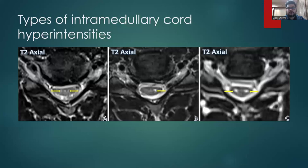The first set of images shows the types of intramedullary cord hyperintensities. Image A shows subtle T2 intramedullary cord hyperintensity. Image B shows a unilateral hyperintensity, whereas Image C shows bilateral hyperintensity on T2-weighted axial images.